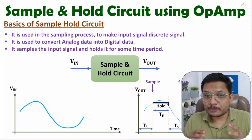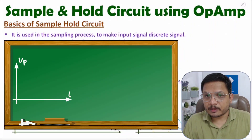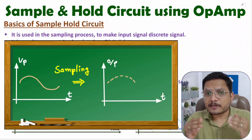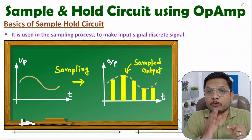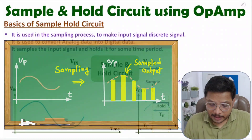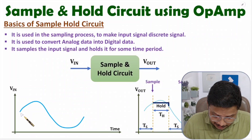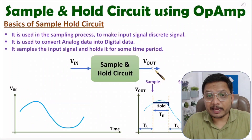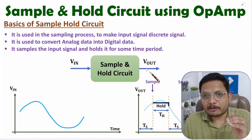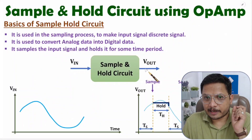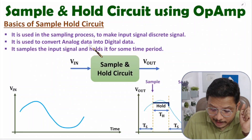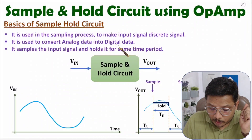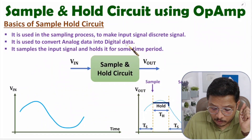Sample and hold circuit is used in the sampling process. The sampling process is used to convert analog data into discrete data, so here input will be analog data and output will be discrete data. Our aim is to convert analog data into digital data, so first we need to convert the analog signal into a discrete signal.